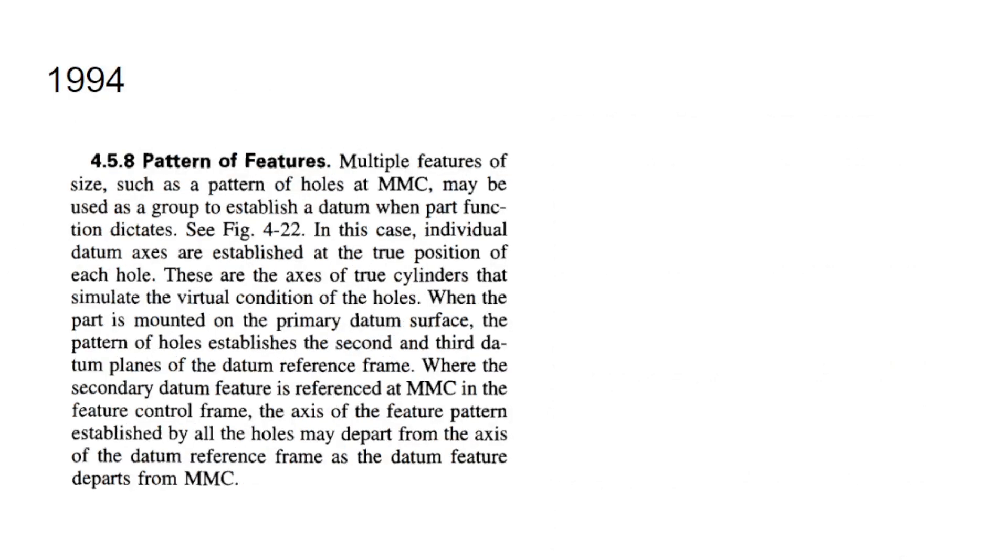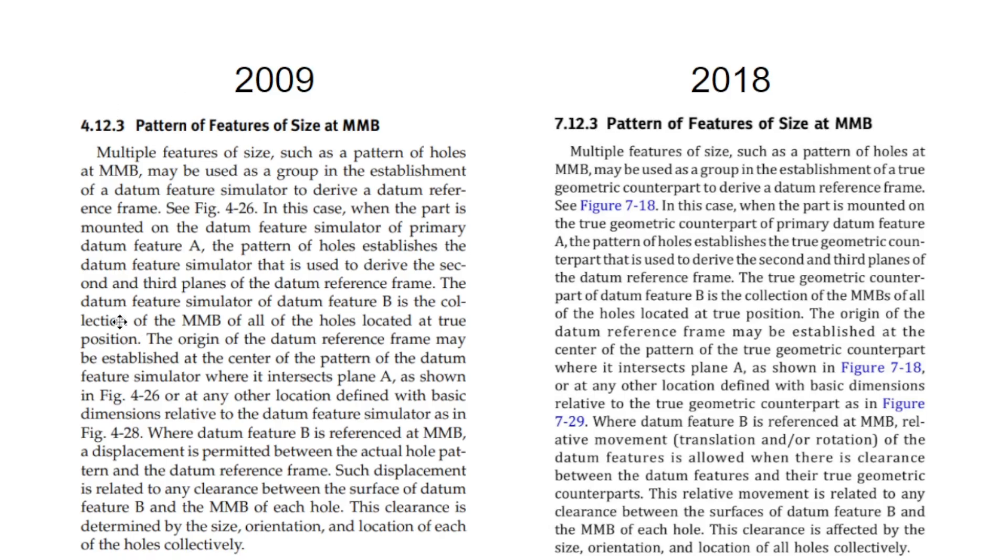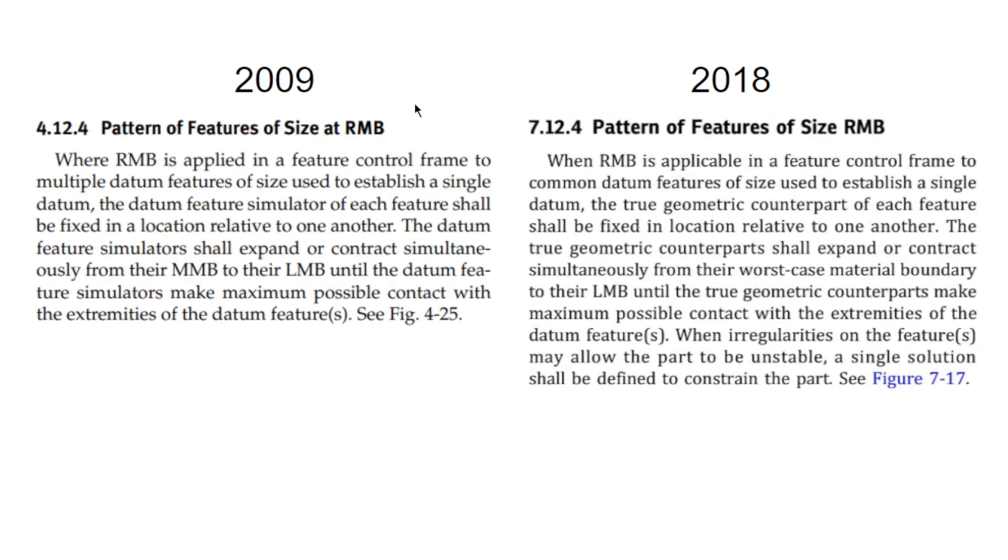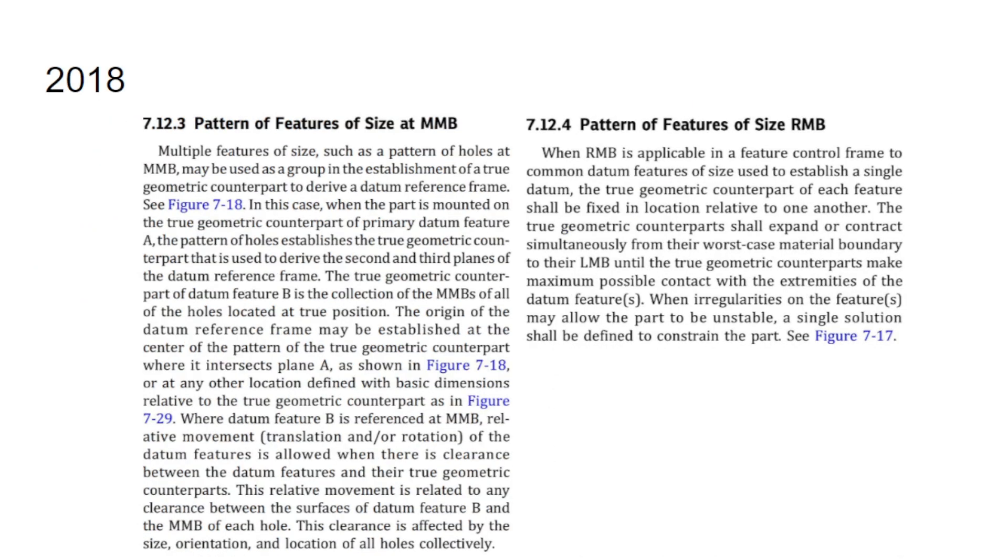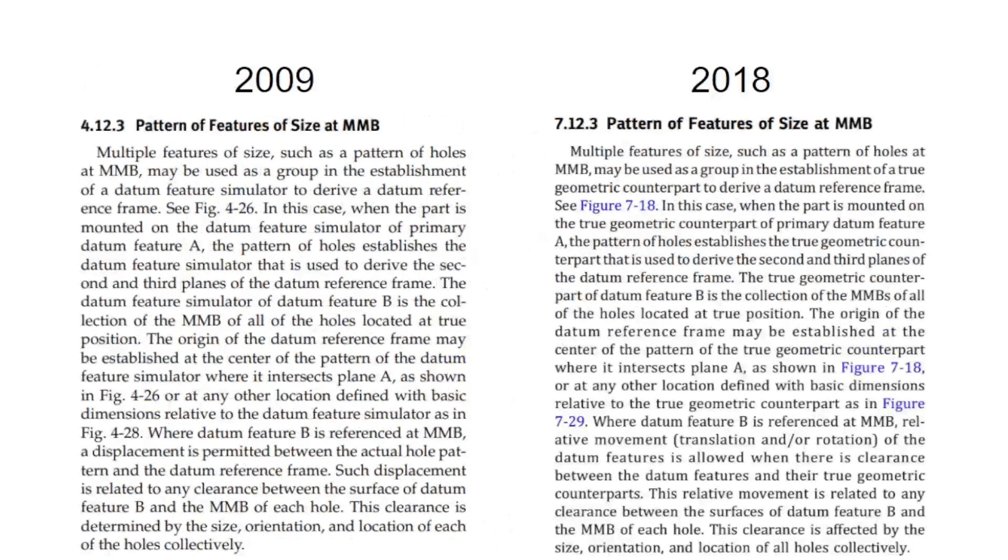At MMB, the information has not really changed since 1994. There have been some language changes but the general idea has stayed about the same. You can see they've updated some of the language like datum feature simulator is now true geometric counterpart. But in the RMB section, they actually added an important feature which is when the irregularities on a feature may allow the part to be unstable, a single solution shall be defined to constrain the part. I will show you now what this is talking about.